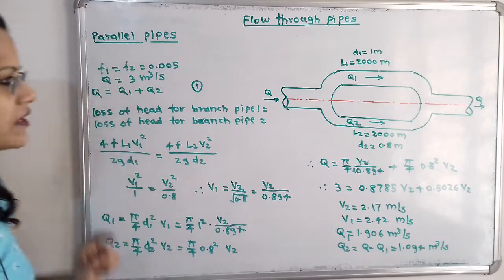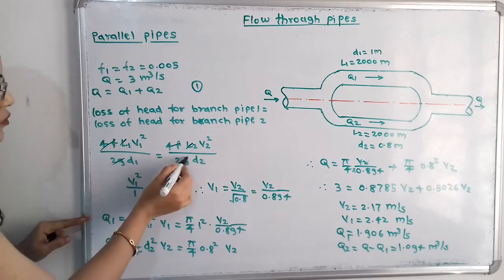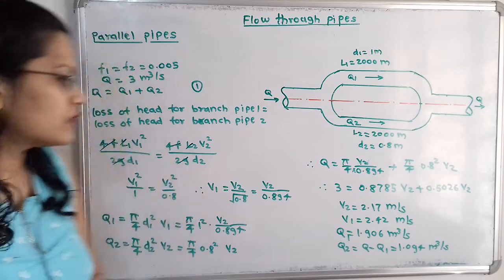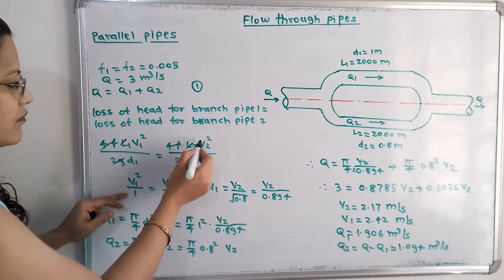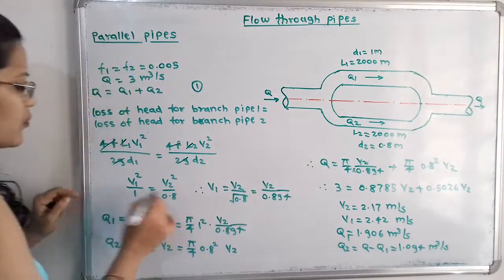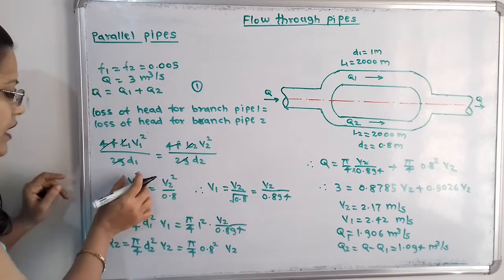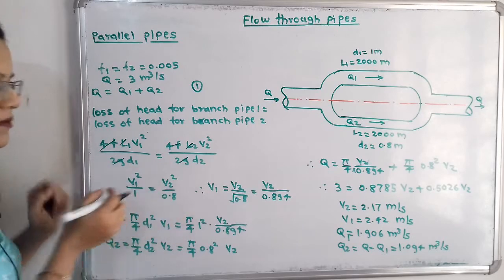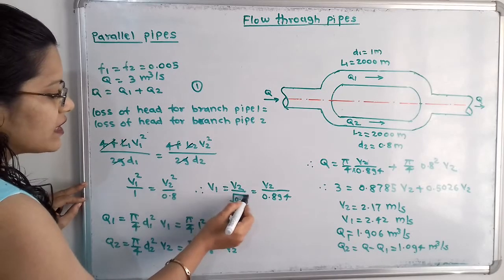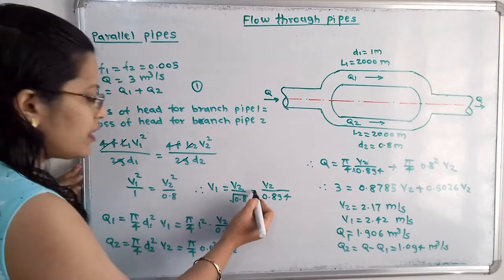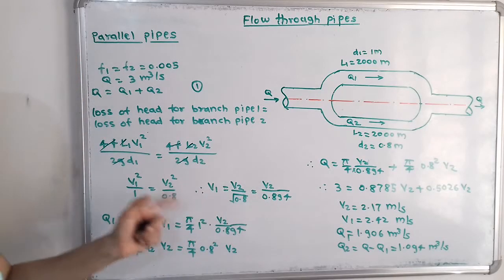Since L1 = L2, the lengths cancel. The 4f terms and 2g terms also cancel, leaving V1²/D1 = V2²/D2, which gives V1²/1 = V2²/0.8. Solving, V1² = V2²/0.8, and taking the square root: V1 = V2/√0.8 = V2/0.894. This expresses V1 in terms of V2.